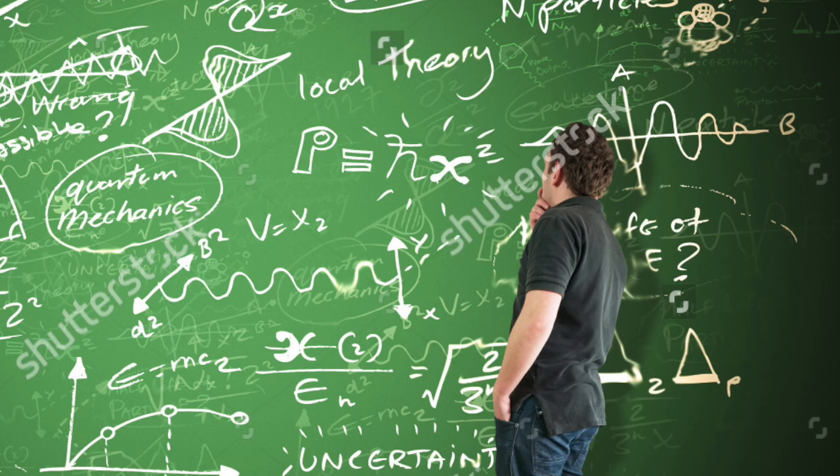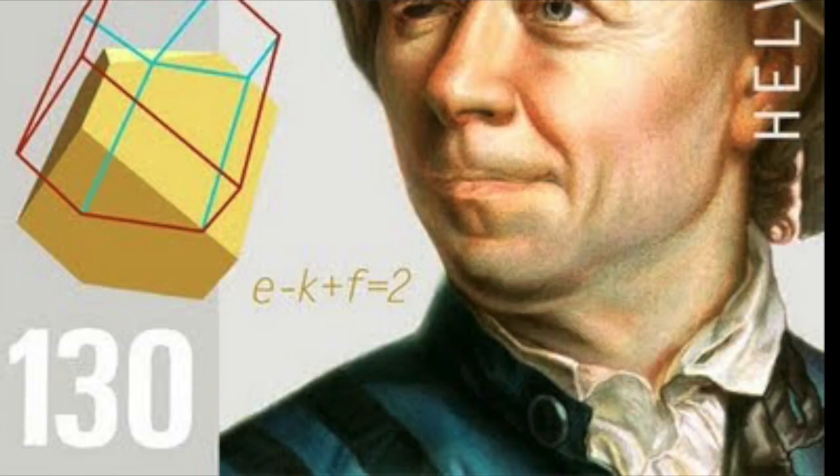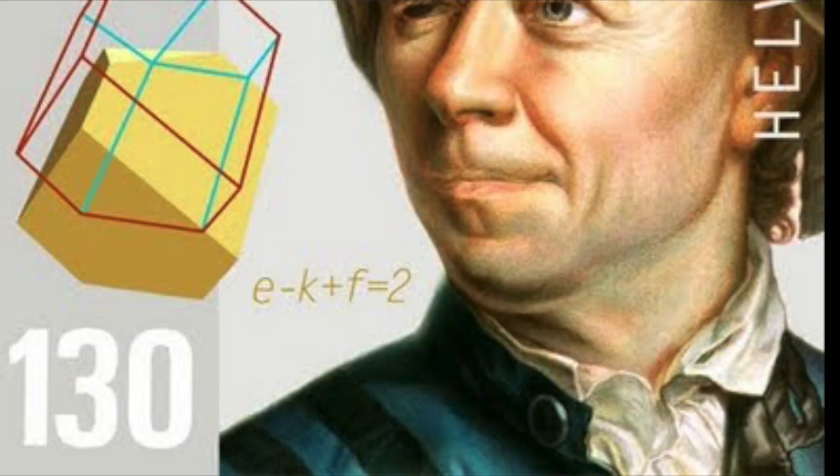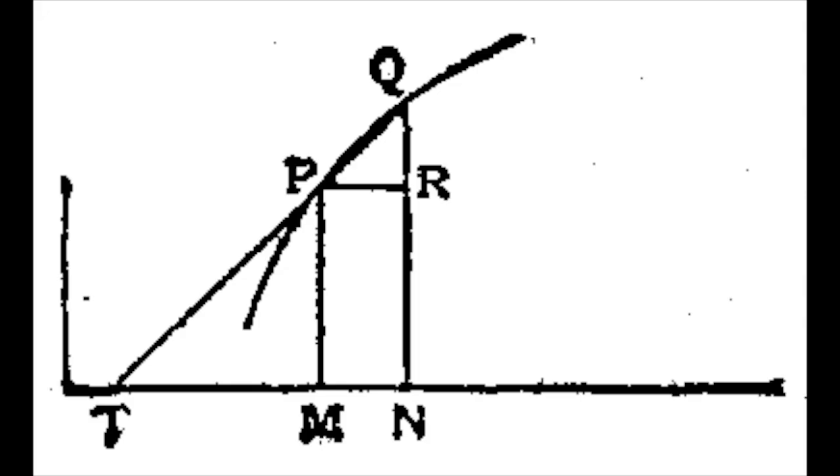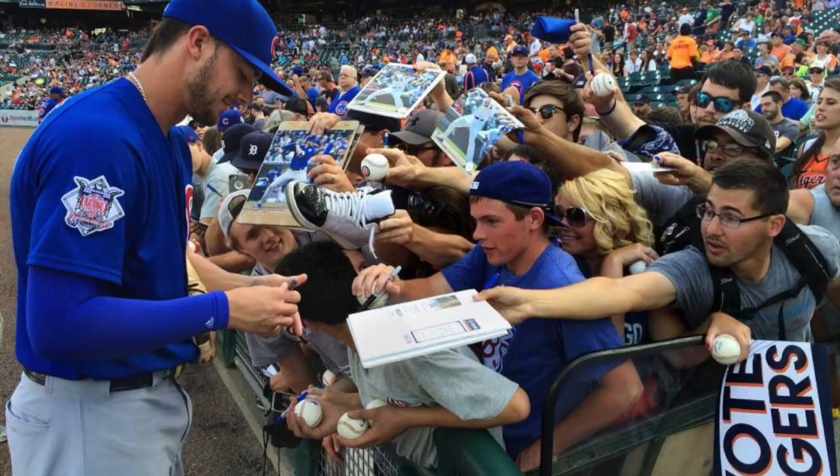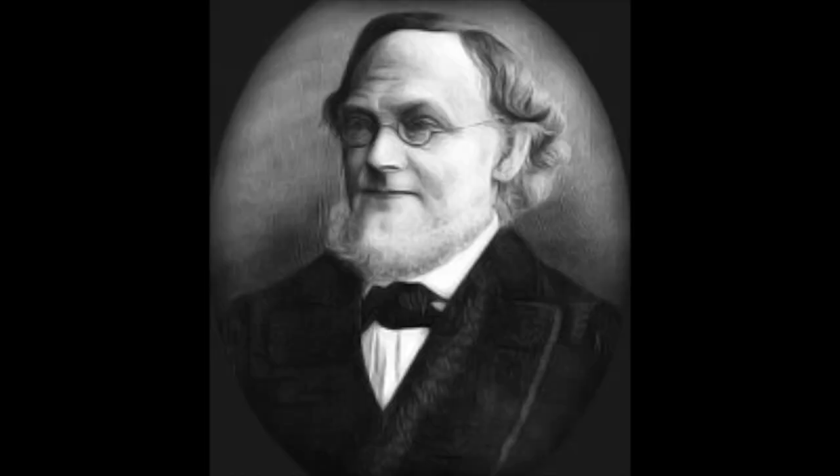Goldbach's conjecture is one of the oldest problems that has yet to be solved or proved in number theory in all of mathematics. In 1742, Goldbach wrote a letter to Leonard Euler, a Swiss mathematician who'd made important and influential discoveries in many branches of mathematics, like infinitesimal calculus and graph theory.